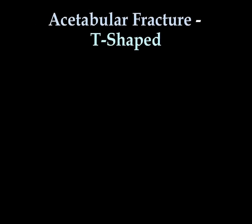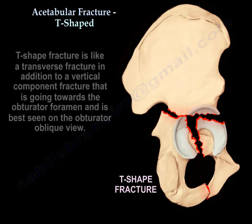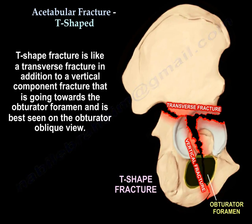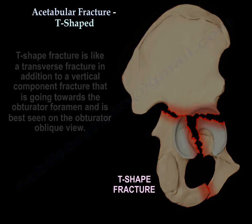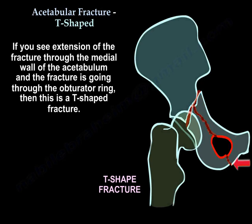A T-shaped fracture of the acetabulum is like a transverse fracture with an additional vertical component fracture going towards the obturator foramen, best seen on the obturator oblique view. If you see extension of the fracture through the medial wall of the acetabulum and the fracture goes through the obturator ring, then this is a T-fracture.